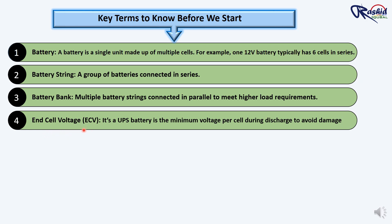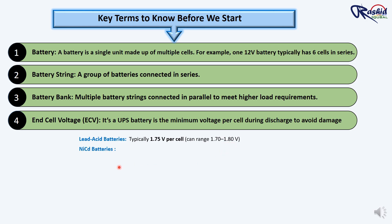Fourth: End cell voltage. End cell voltage is the lowest permissible voltage per cell during the discharge cycle, beyond which the battery should not be discharged. Discharging the battery below this voltage can lead to permanent damage, reduced capacity, and a shorter lifespan. Typical end cell voltages: lead acid battery — 1.75V per cell (range 1.70 to 1.80V); nickel-cadmium batteries — 1.0V to 1.1V per cell.